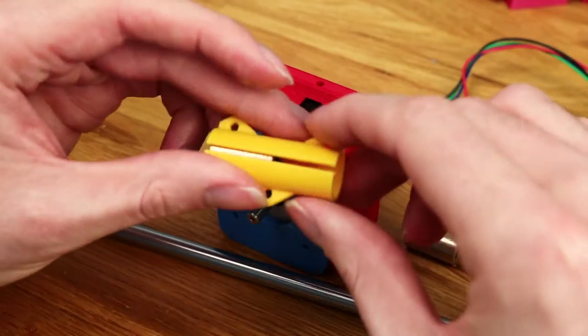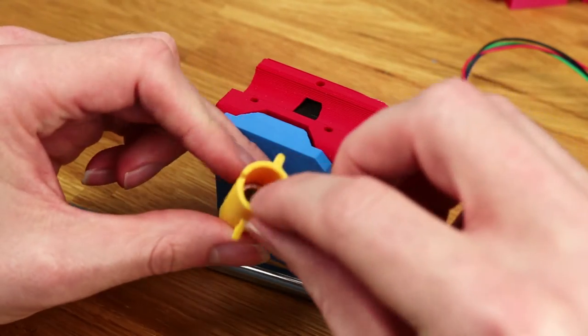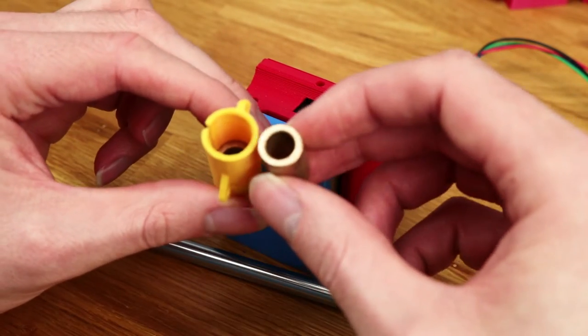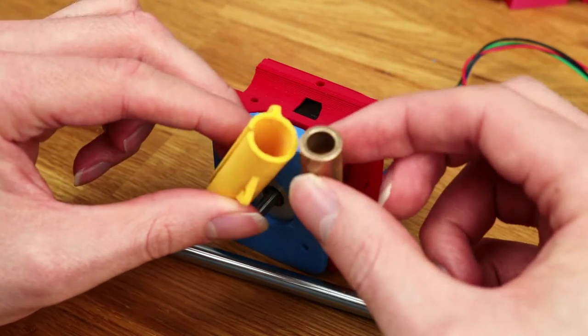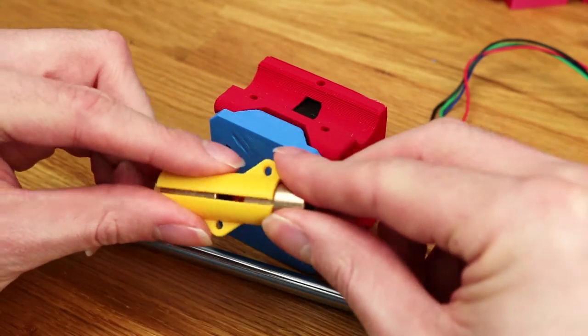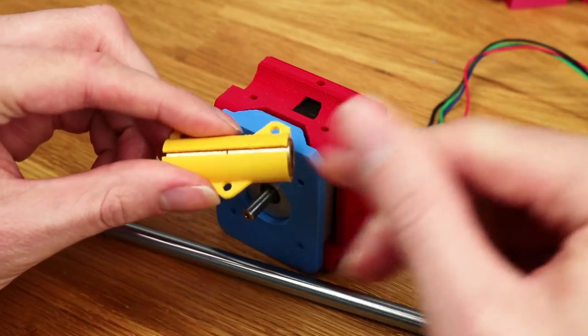The small yellow piece here is just a clamp to hold them together. The inner diameter here is slightly less than the outer diameter of the bearing. So as you push them together, it holds them tight. In this case, not quite tight enough.